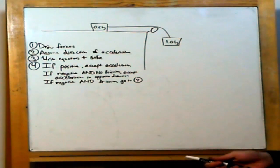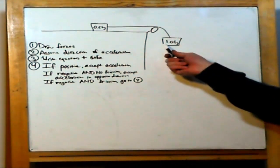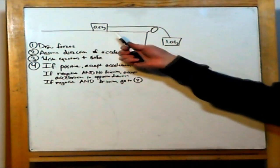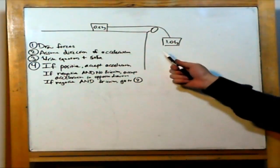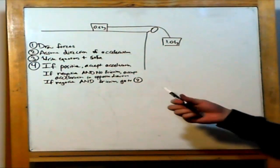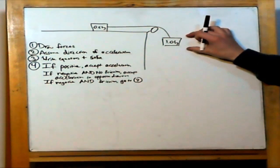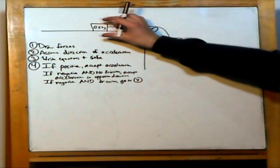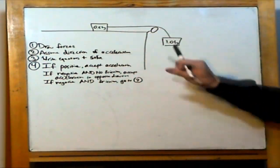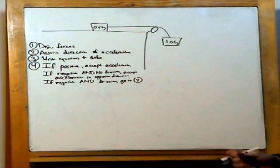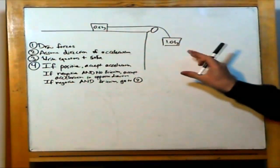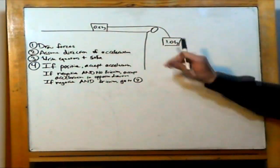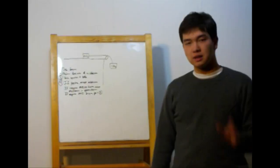Here's your basic pulley problem. We have two masses, one of one kilogram, the other half a kilogram, attached to each other by a rope. One of these masses is going to be pulling down, causing the system to move — or maybe not. Maybe this thing is going to be completely stable and just be held there.